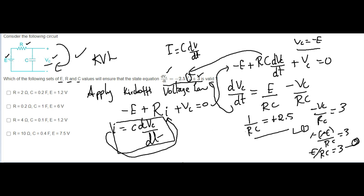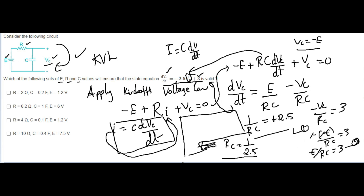From these equations, RC equals 1 divided by 2.5. So 1/RC equals 2.5. Then from the first equation: E times (1/RC) equals 3, and since 1/RC is 2.5, we get E equals 3 divided by 2.5, which equals 1.2 volts. So E is confirmed to be 1.2 volts.